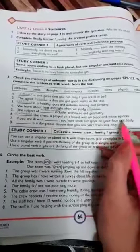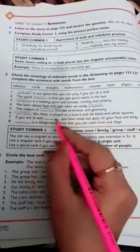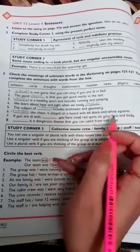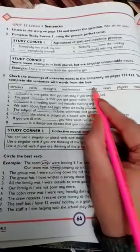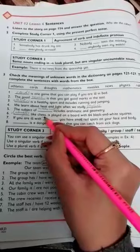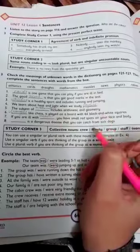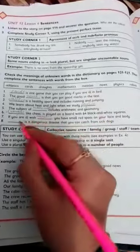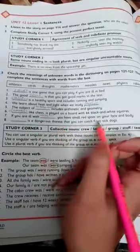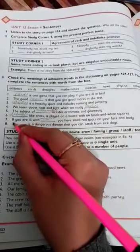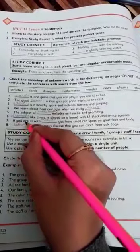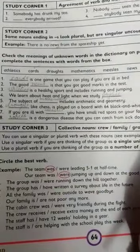If you are ill with blank, you have small red spots on your face and body. This is the name of a disease which is measles. Blank is a dangerous disease that you can catch from sick dogs—rabies. Rabies is a disease that you can catch from dogs. So these are the correct answers for filling in the blanks.